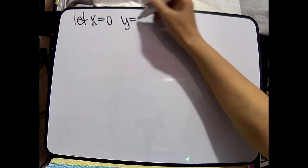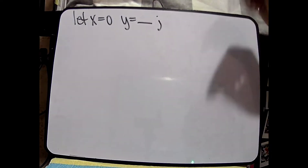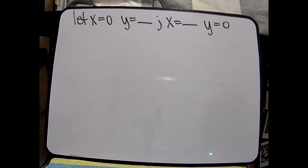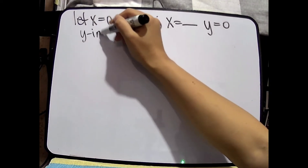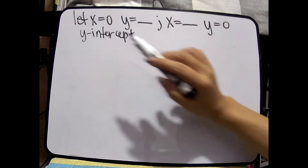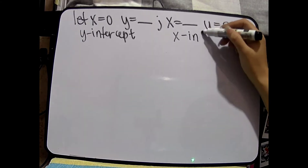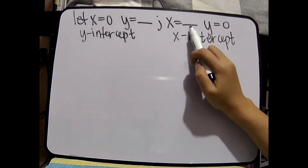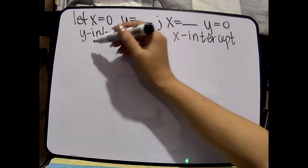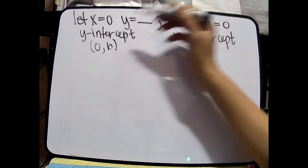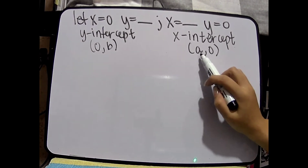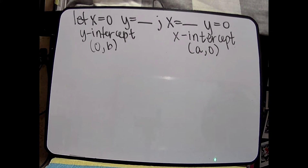Mag-relate tayo ng x as equals to 0, and then hanapin natin y. And then, to get the another coordinates, yung x yung hahanapin natin kasi yung y naman yung gagawin ng 0. So, ito ang tatawagin natin y-intercept kasi yung y yung magkakaroon ng value kasi ginawang 0 yung value for x. And then, ito naman yung tatawagin nating x-intercept kasi yung x value yung magkakaroon ng number kasi sinet natin yung y ay 0. So, yung y-intercept, that is (0, b), and yung x-intercept is yung (a, 0). So, yung b represents a number on y-intercept, yung a, it represents a number sa x.